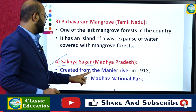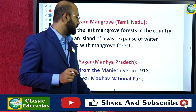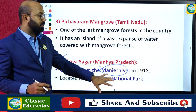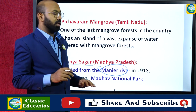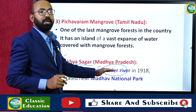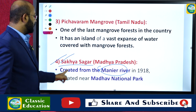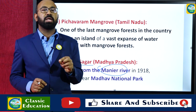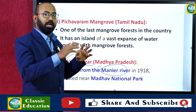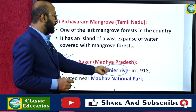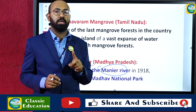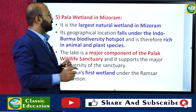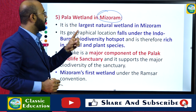The fourth new Ramsar site is Sakhya Sagar, located in Madhya Pradesh. This wetland was created from the Manya River channel. The Sakhya Sagar wetland is located near Madhav National Park, one of the important national parks in Madhya Pradesh.